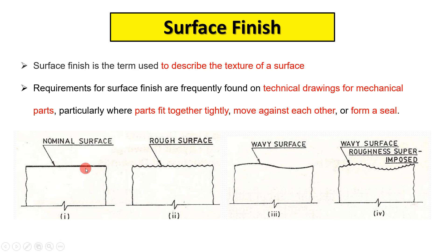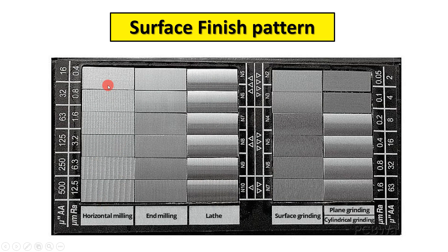On engineering drawings we show surface finish symbols. Requirements for surface finish are frequently found on technical drawings for mechanical parts, particularly if parts fit together tightly and move against each other, or form a seal. So we require good surface finishing for applications where two parts fit tightly, move relative to each other, or need sealing.